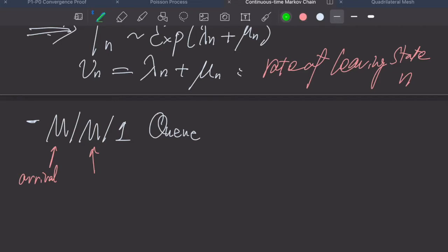The second M refers to the departure time being exponentially distributed. This departure process is Markovian. This departure time can also be interpreted as service time. It means some customer enters the queue, gets service, and gets out.